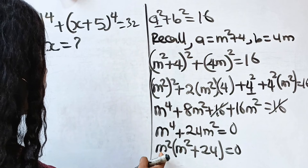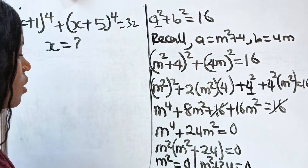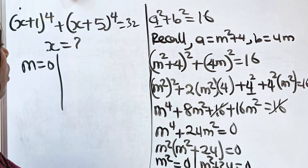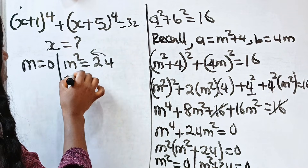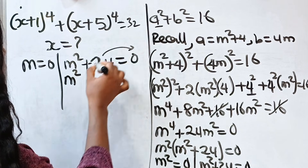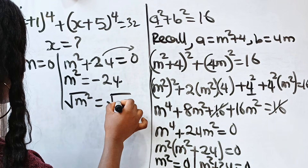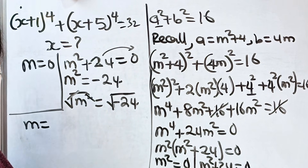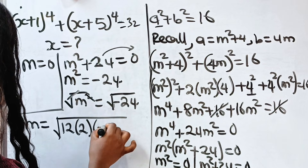From this we get two equations: m squared equals 0, giving m equals 0; or m squared plus 24 equals 0, giving m squared equals negative 24. Taking the square root of both sides, m equals the square root of negative 24.